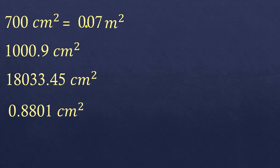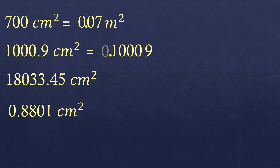Second example: 1,000.9 square centimeters. We move the decimal point four times to the left — one, two, three, four — and add a 0 at the left. There are no empty spaces to fill in. So 1,000.9 square centimeters is equivalent to 0.1009 square meters.